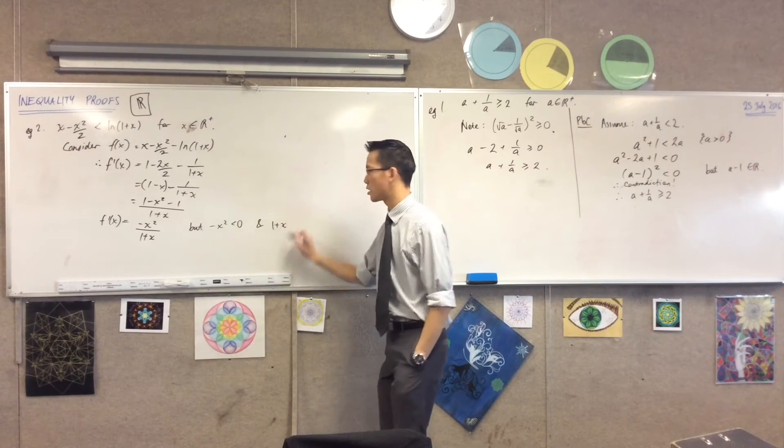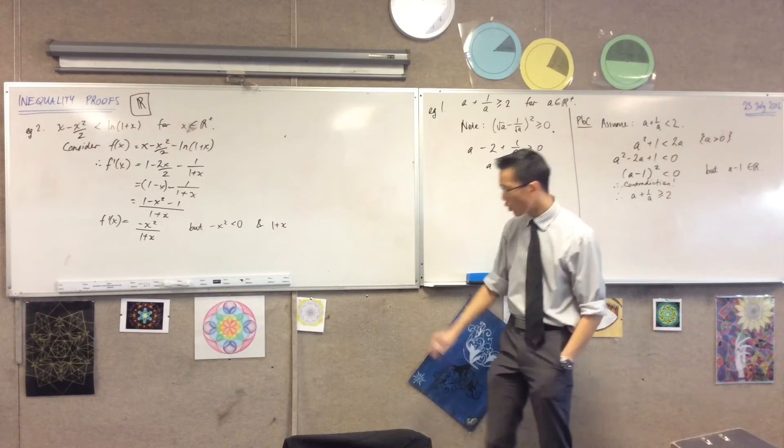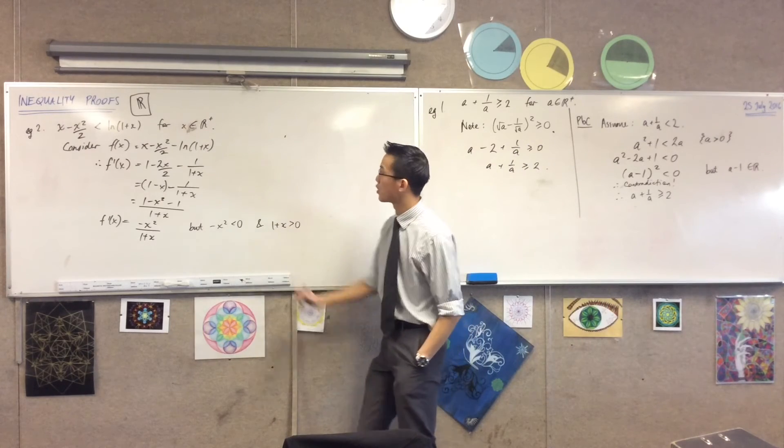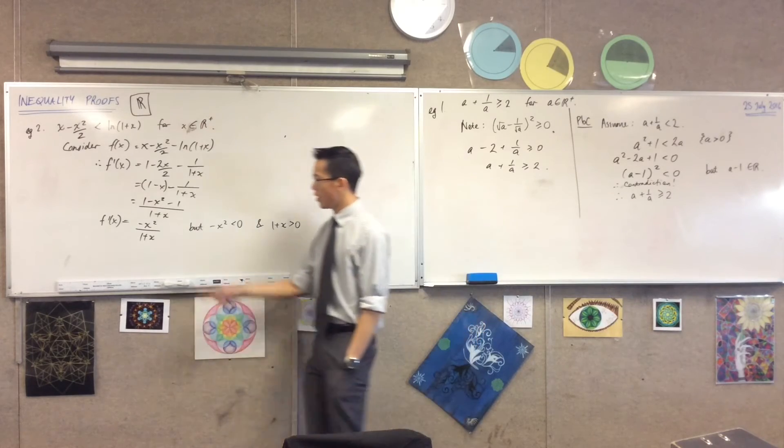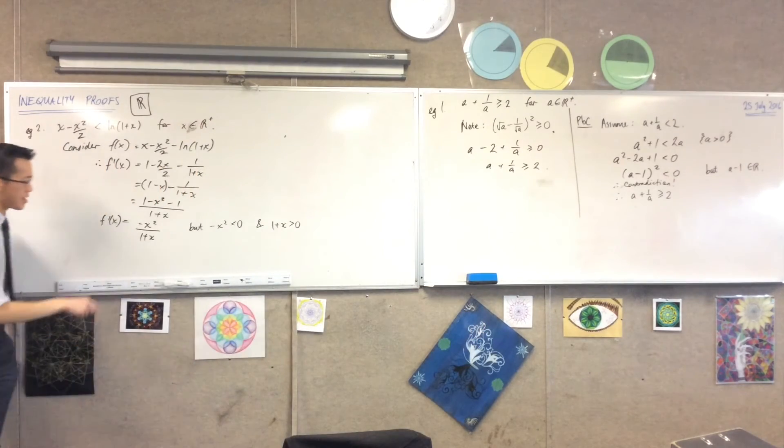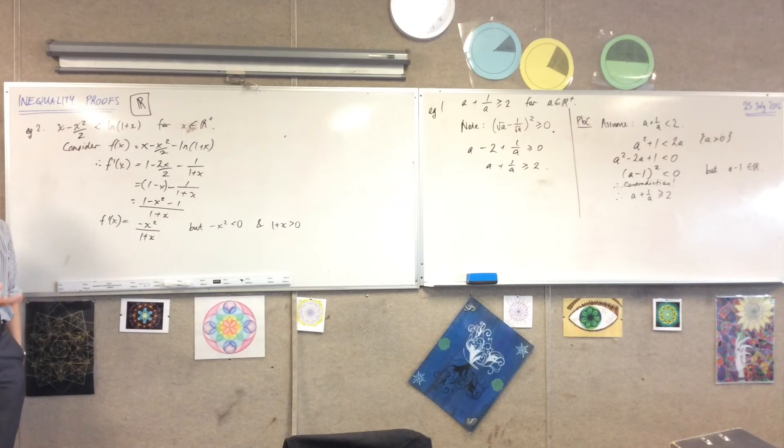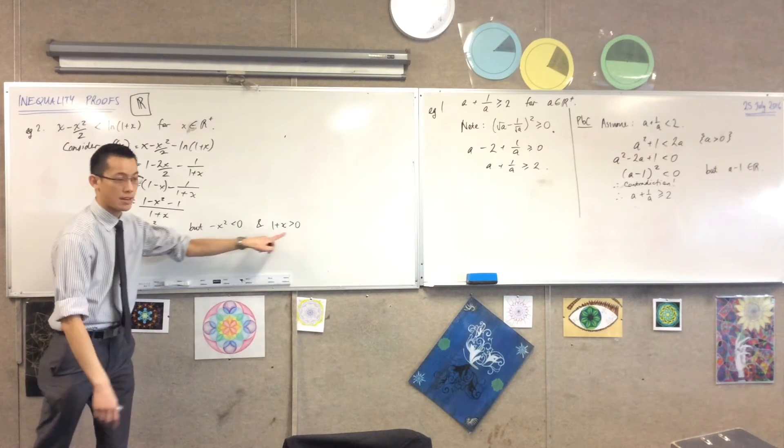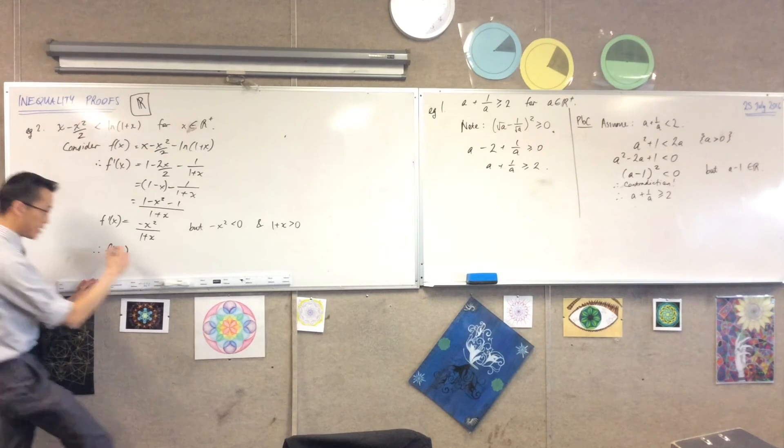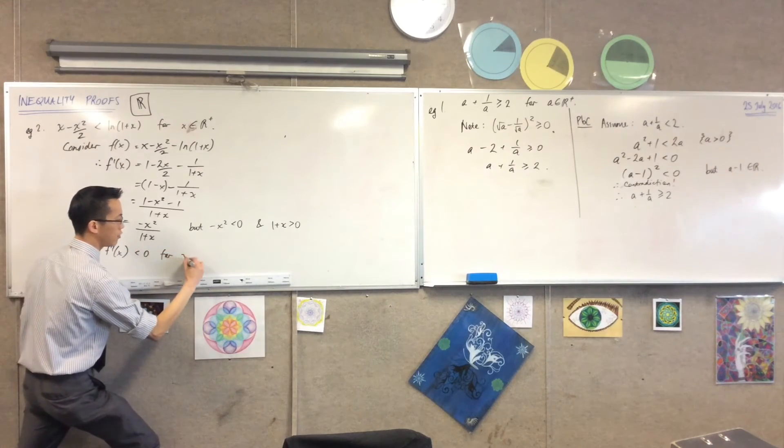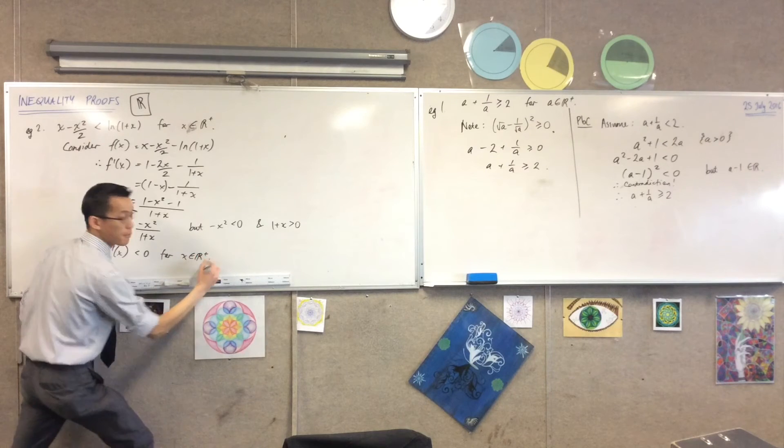What about the denominator? What can you tell me about that? It's always positive, right? Because you start from a positive number and you add something to it, so it stays positive. Therefore what you've got here is the equation which is same as the product of a negative number and a positive number. So therefore f'(x) is less than zero for all the values in the domain.